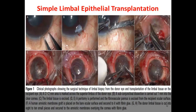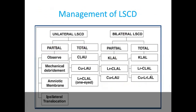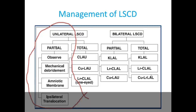In simple limbal epithelial transplantation (SLET): limbus is taken from the opposite healthy eye, cut into small segments, the diseased eye surface is debrided of vascularization, amniotic membrane is placed on the diseased eye, then the small limbal segments are spread over the surface. This is a very important technique with huge significance currently and is the procedure of limbal epithelial transplantation preferred by many surgeons. In unilateral partial limbal stem cell deficiencies, mechanical debridement or amniotic membrane transplantation alone may help.